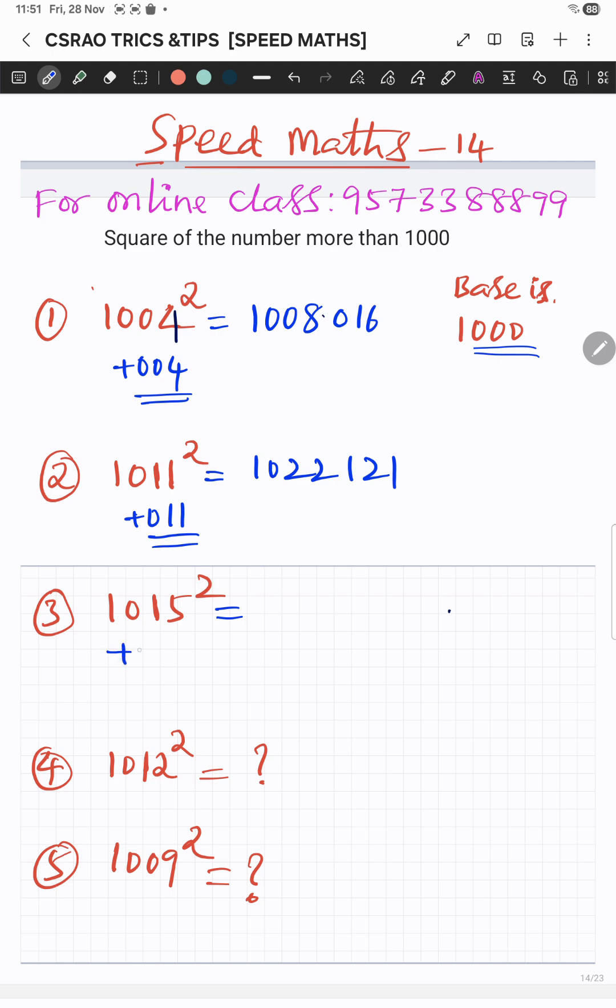Now we are going to do this one: one zero one five. It is more than thousand, okay. Now add them: one zero three zero. And fifteen square, already we know, 225. Okay, that is it. Right, now you have try to remind me. Thank you.